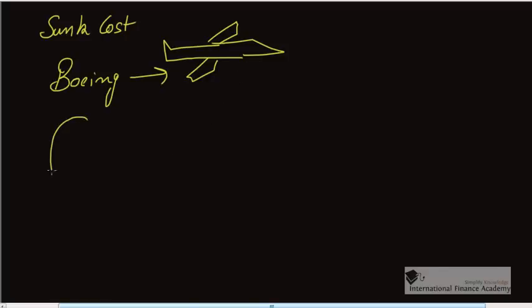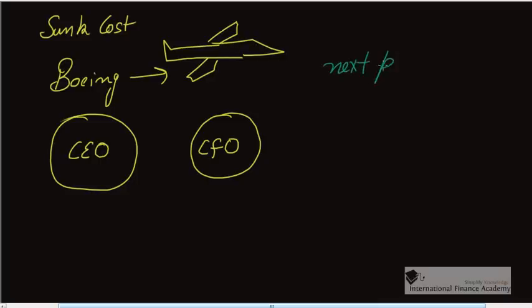There were two guys fighting in the company: one was CEO and another guy was financially more intelligent called CFO. They were fighting over whether to manufacture the next plane.